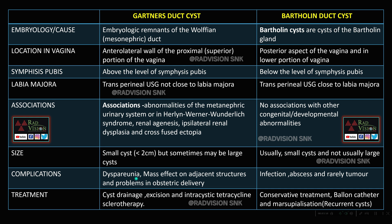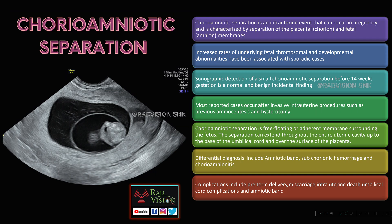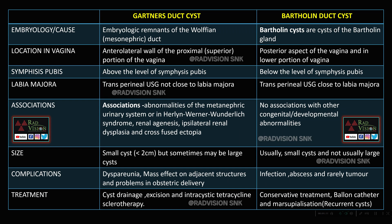Complications of Gartner duct cysts include dyspareunia, mass effect on adjacent structures, and problems in obstetric delivery. Bartholin duct cyst complications include infection, abscess, and rarely tumor. Treatment for Gartner duct cyst includes cyst drainage, excision, and intracystic tetracycline sclerotherapy. Bartholin duct cyst management includes conservative treatment, balloon catheter, and marsupialization for recurrent cases. These are the key differentiating points between Gartner duct cyst and Bartholin duct cyst.